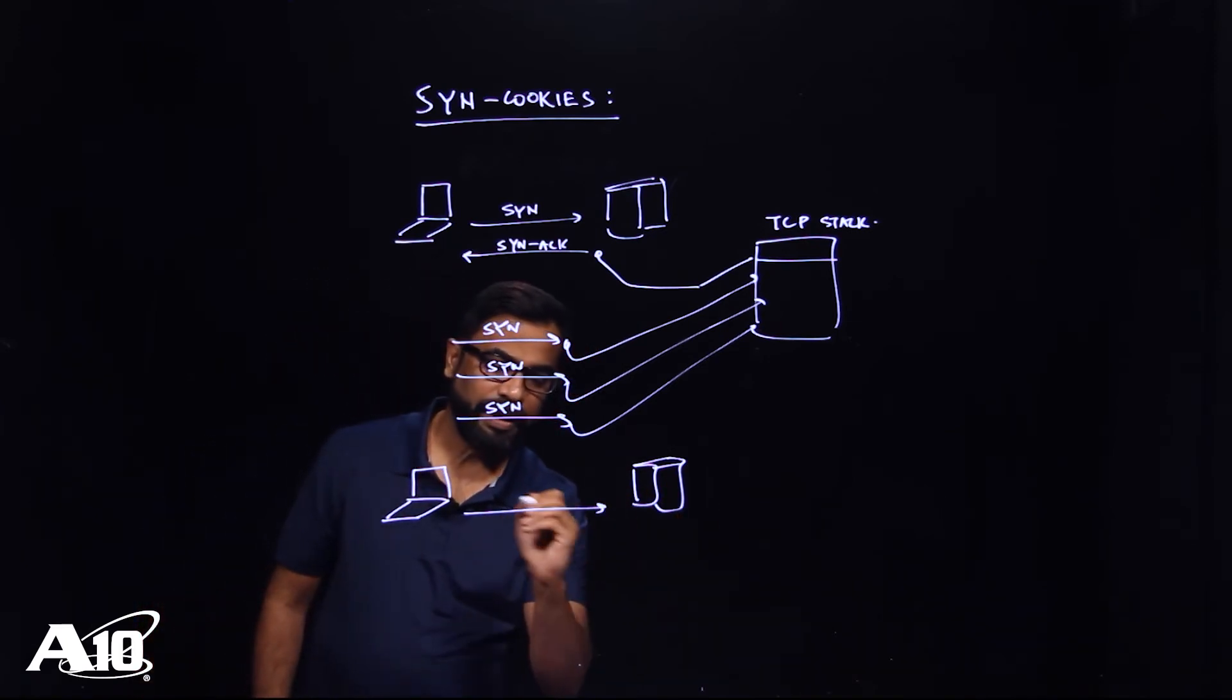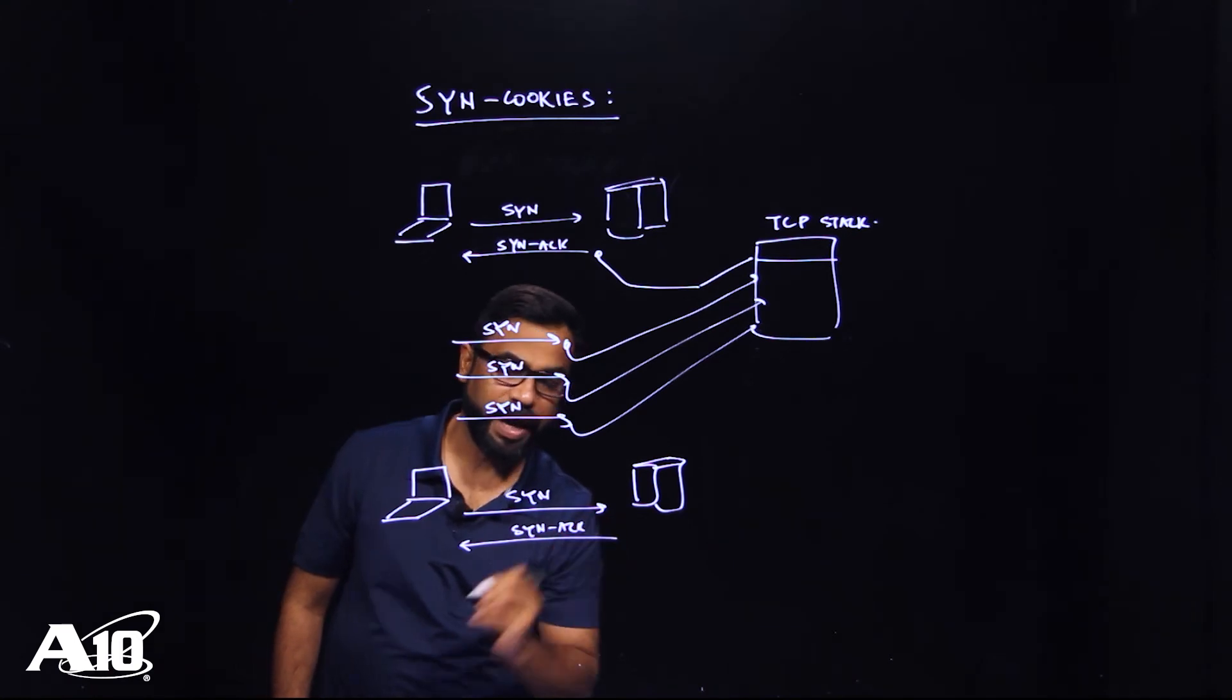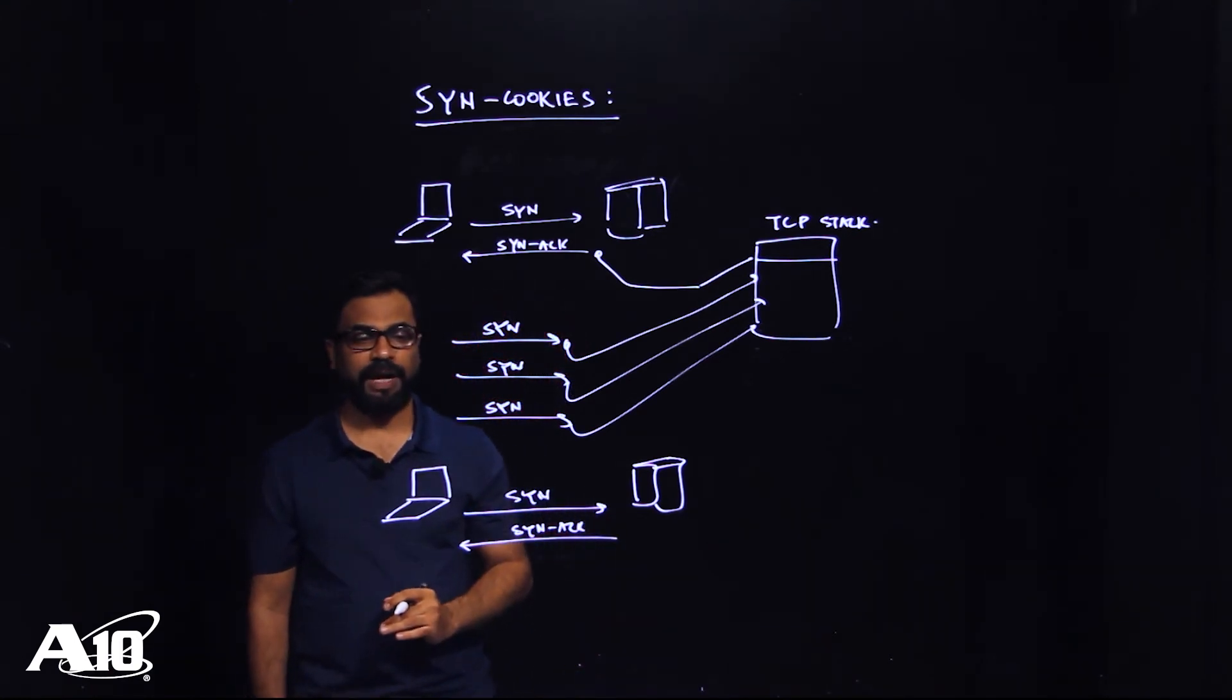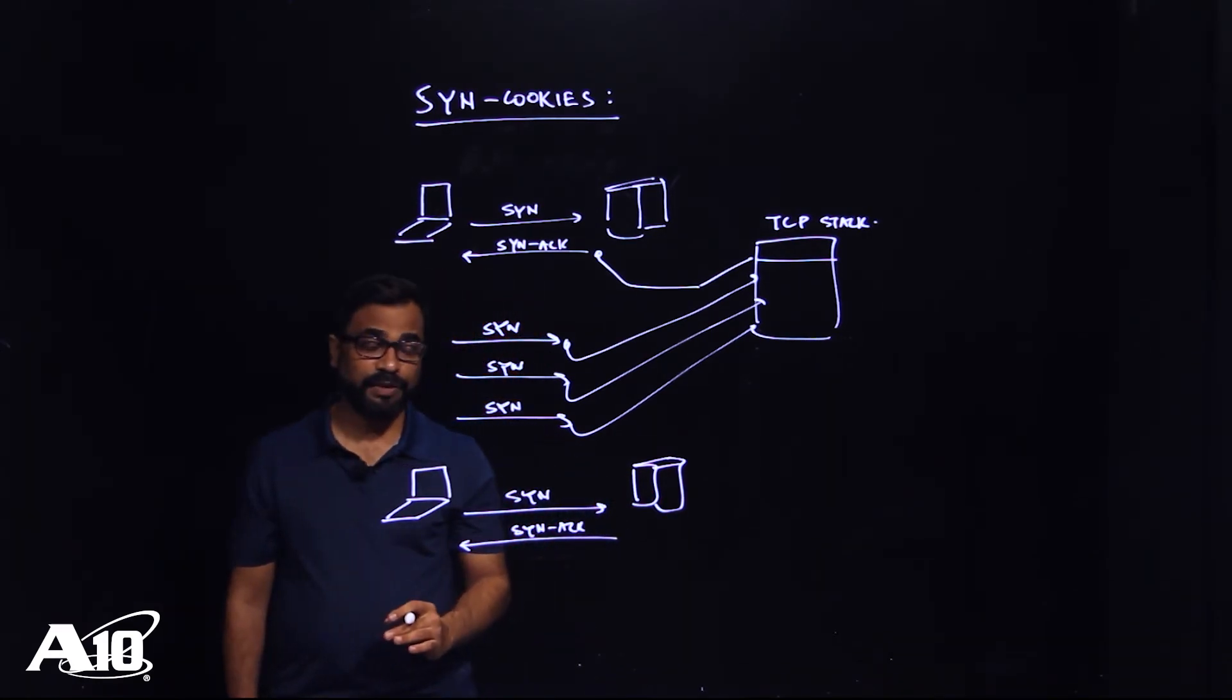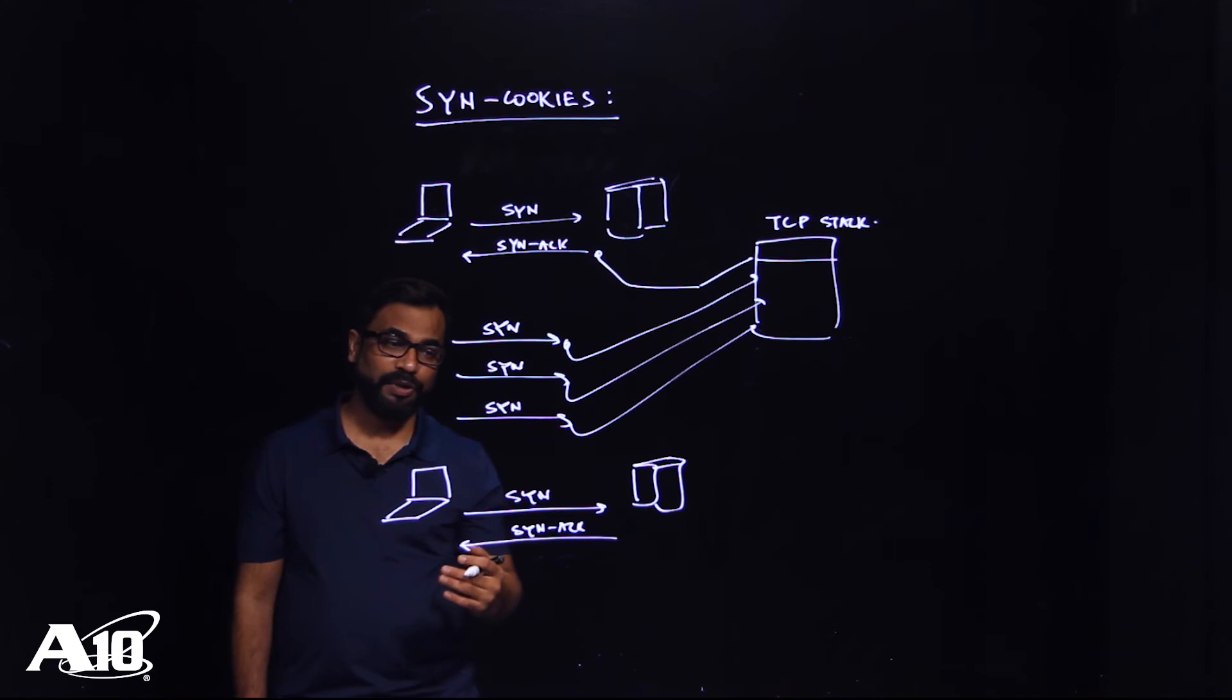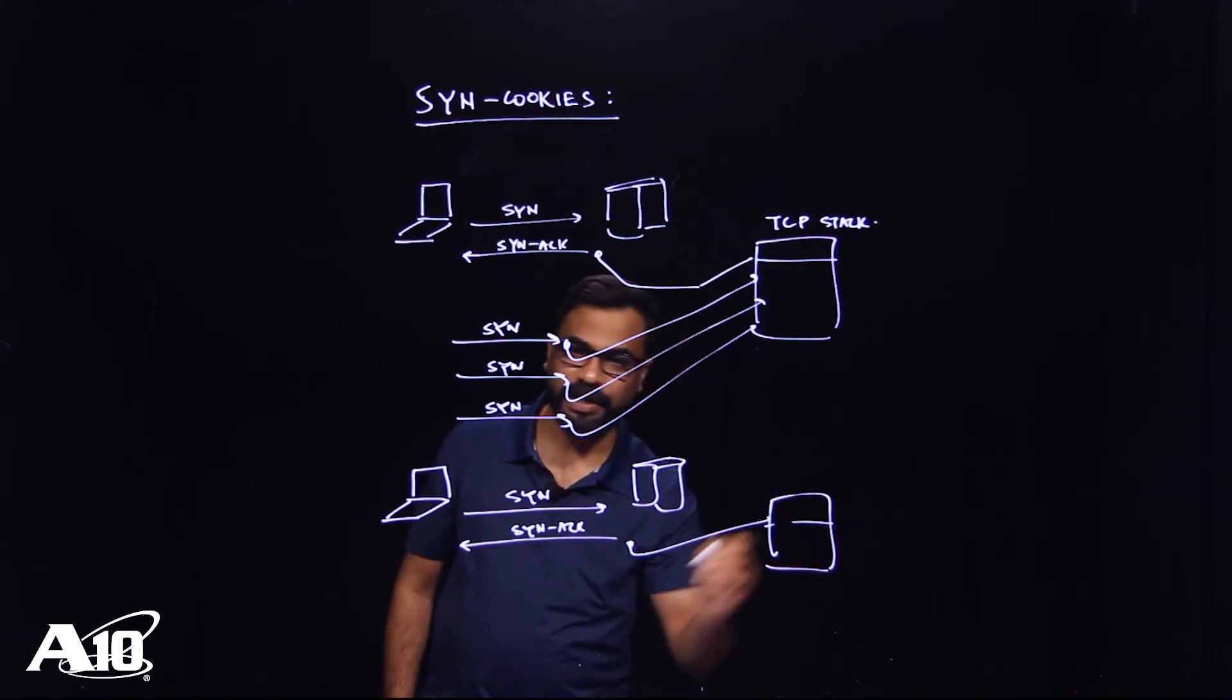What will happen is upon receiving a SYN, the server is going to respond again with a SYN-ACK. But now at this point in time, the sequence number that has been used in the SYN response by the server is going to be generated using a secret mathematical function. And at that point in time, it doesn't need to maintain the state information in the TCP stack.